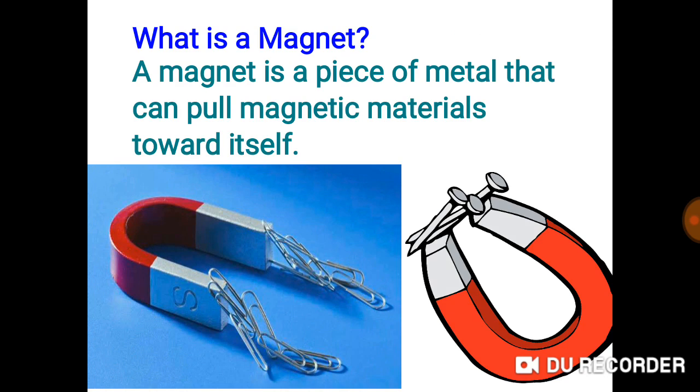What is a magnet? A magnet is a piece of metal that can pull magnetic materials toward itself.